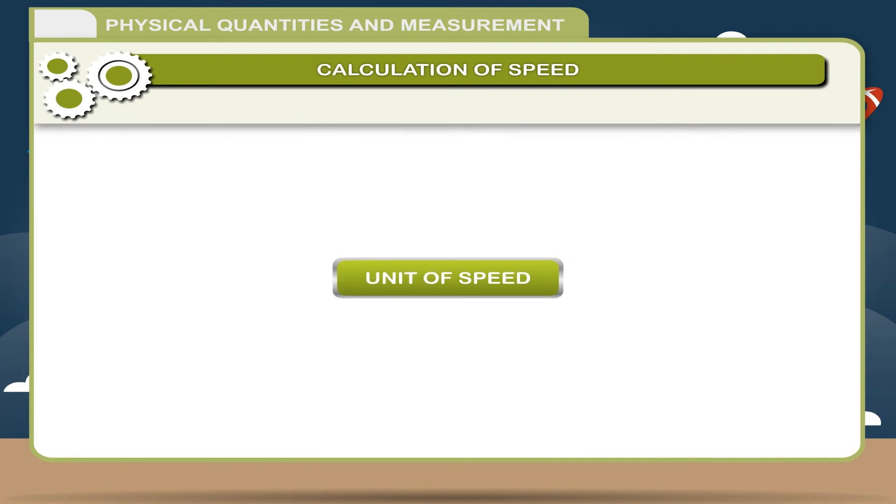Unit of speed: The unit of speed depends upon the units of distance traveled and time taken. The SI unit of distance is meter and time is second. Thus, the SI unit of speed is meter per second. Other units are centimeter per second and kilometer per hour.